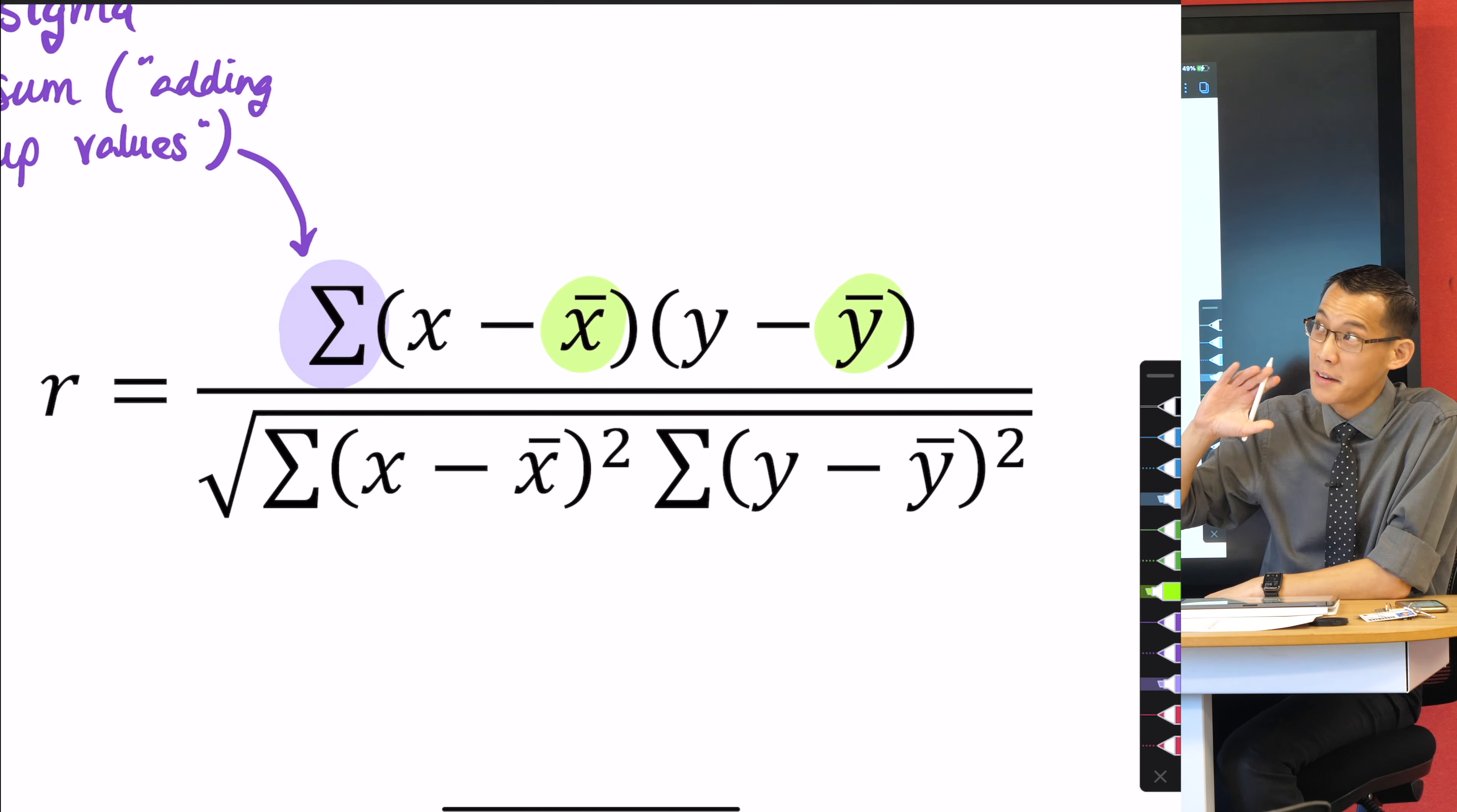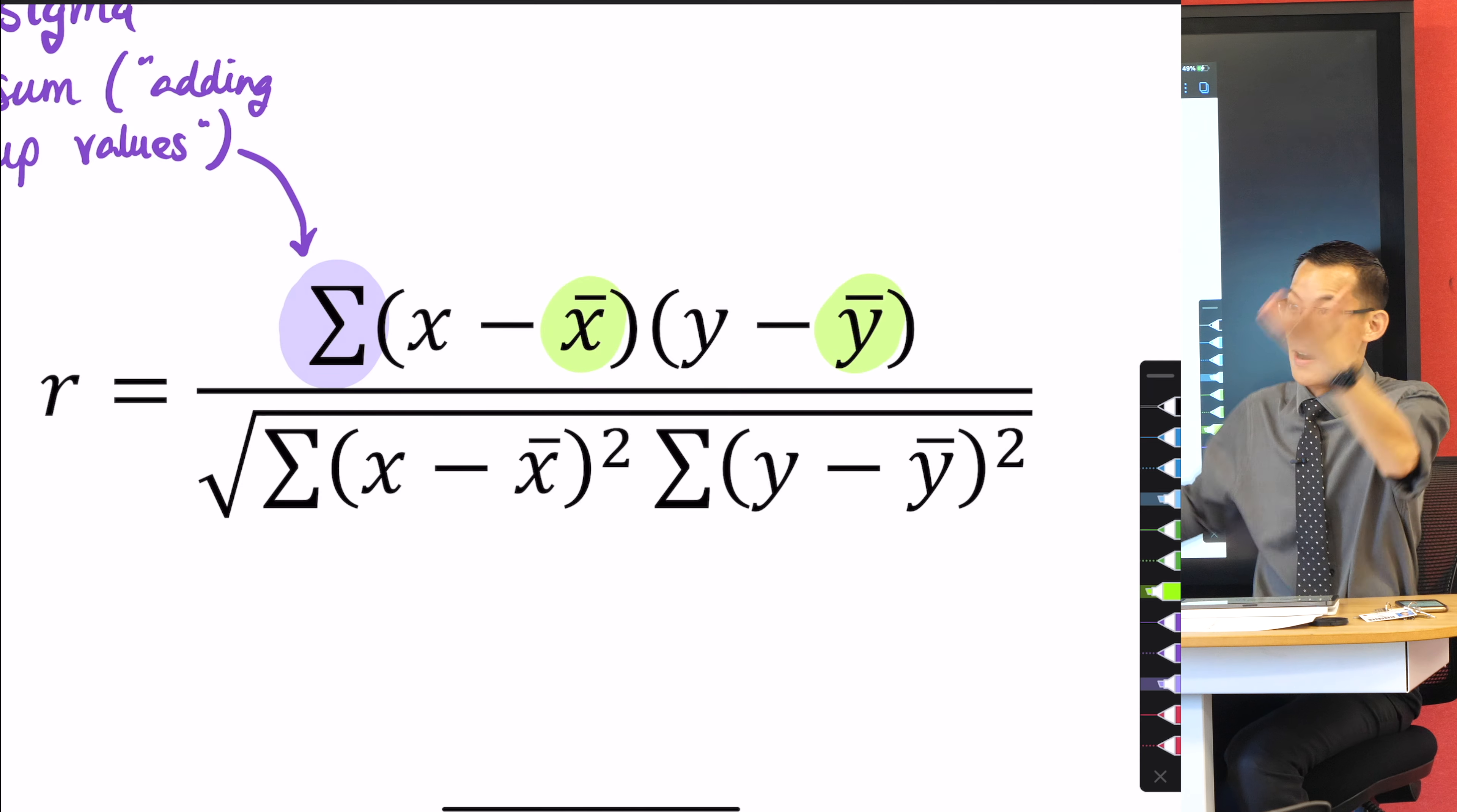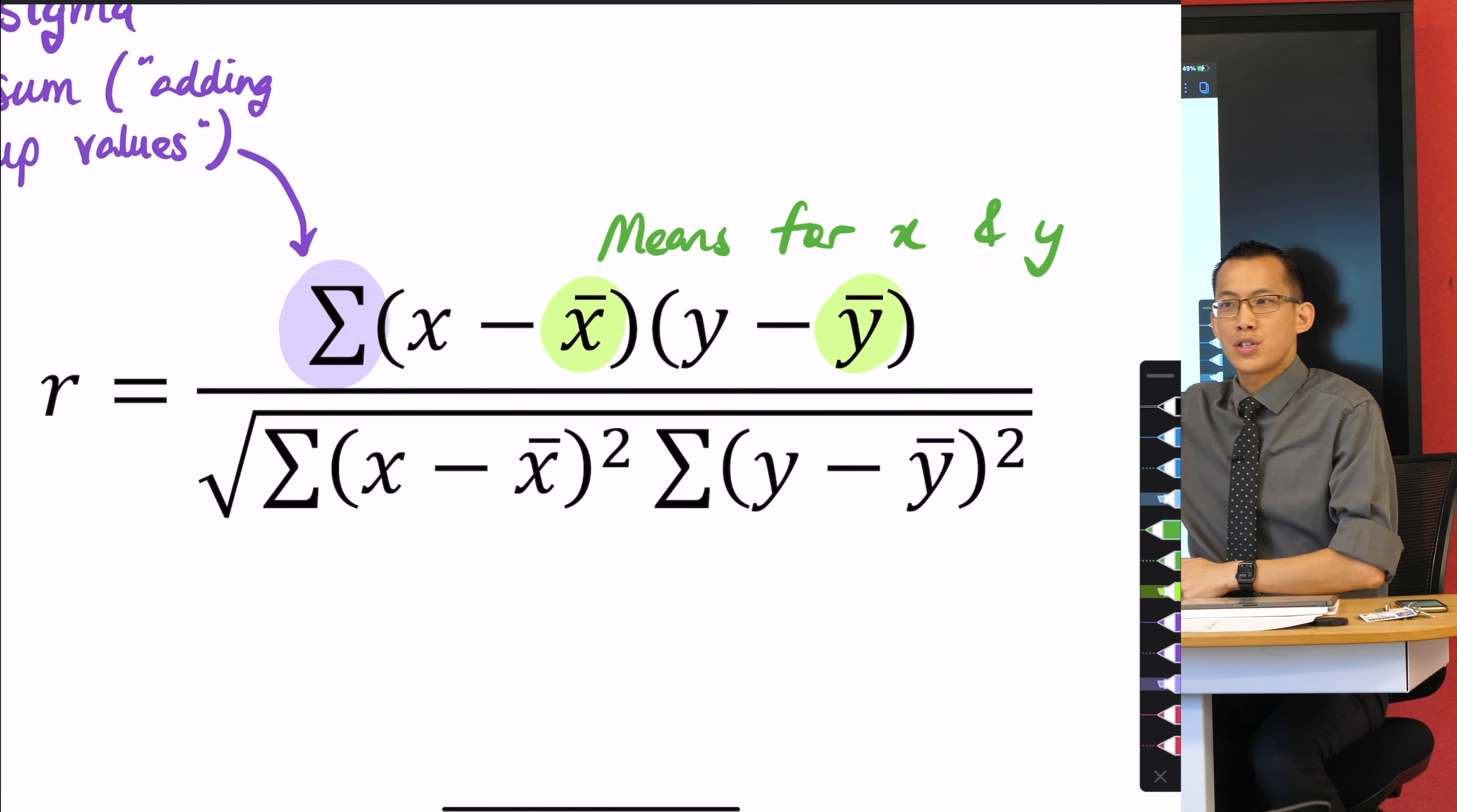This is interesting—we're in statistics. The bar over the top actually can mean a bunch of different things depending on context. In statistics it means the average, it means the mean. You've got one for x, you got one for y. Why do I have two different means? What kind of data is this again? It's bivariate data—two variables, two means.